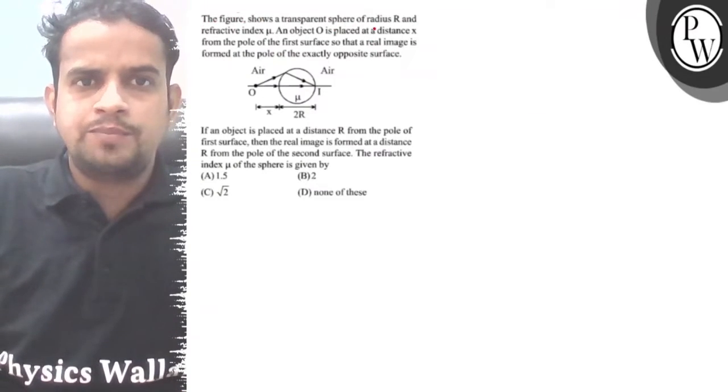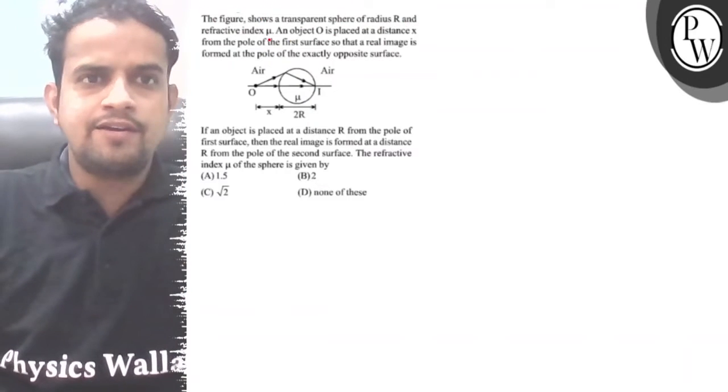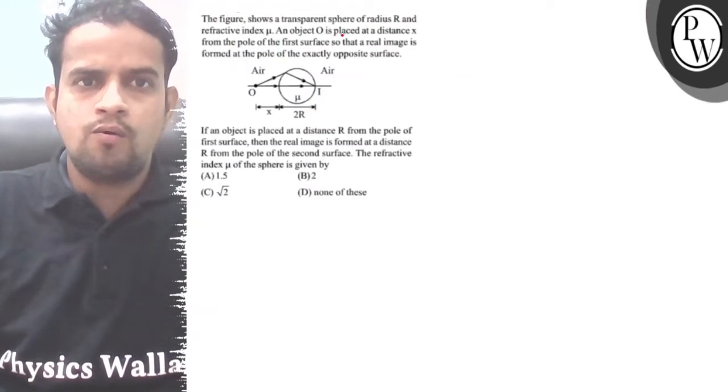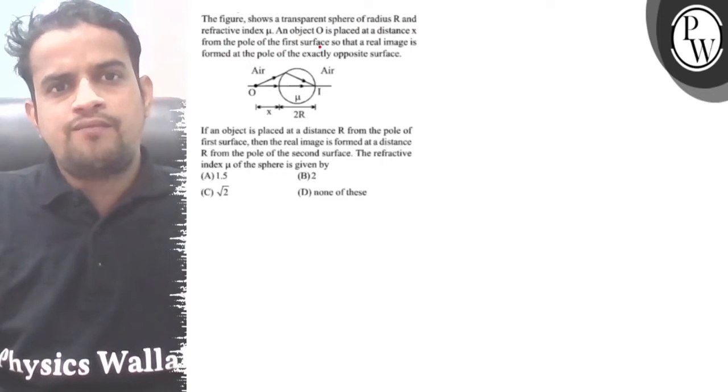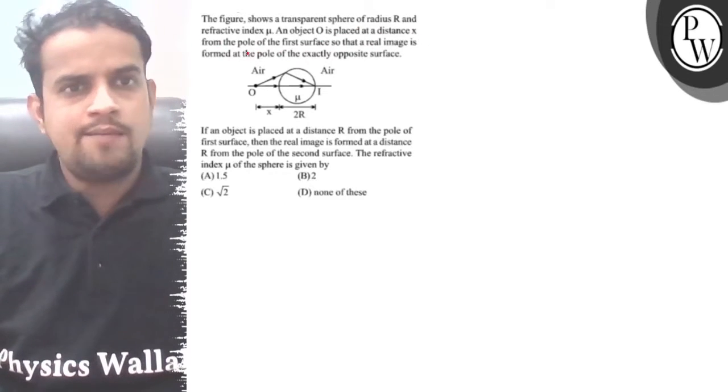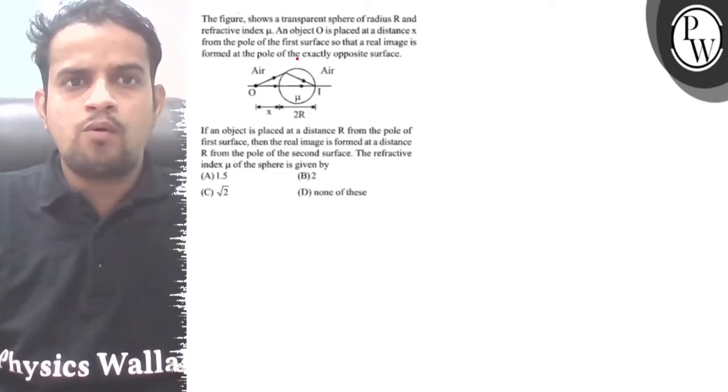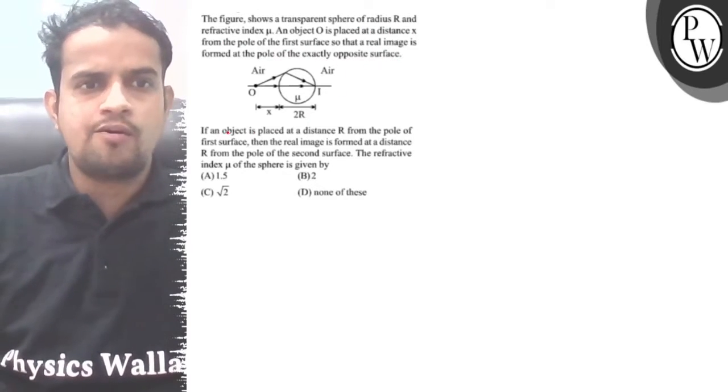The figure shows a transparent sphere of radius r and refractive index mu. An object O is placed at a distance x from the pole of the first surface so that a real image is formed at the pole of the exactly opposite surface.